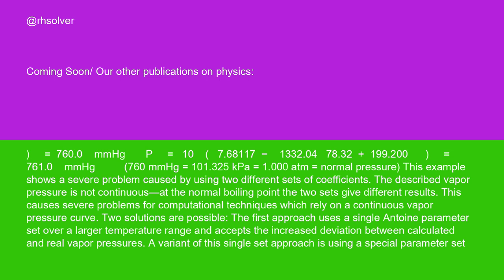This example shows a severe problem caused by using two different sets of coefficients. The described vapor pressure is not continuous. At the normal boiling point, the two sets give different results.